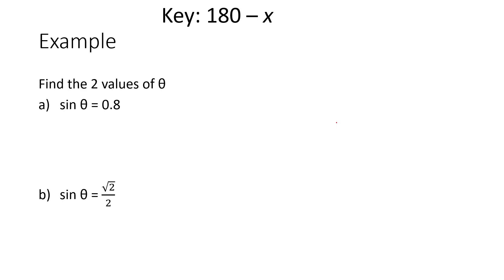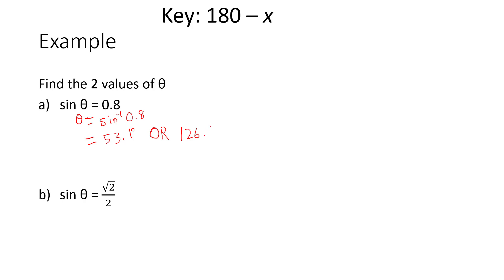For example, question one: find the two values of theta given sine theta = 0.8. We move sine over, so theta equals inverse sine of 0.8. Keying this into the calculator gives 53.1 degrees. The other value of theta is 126.9 degrees.